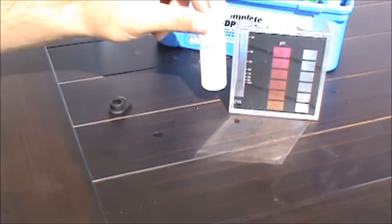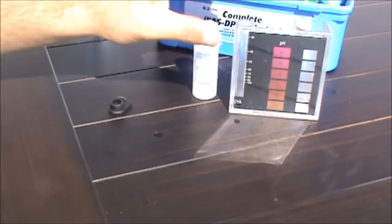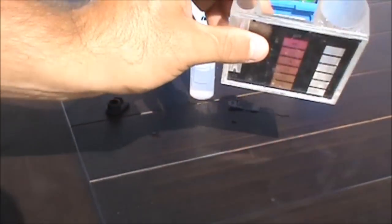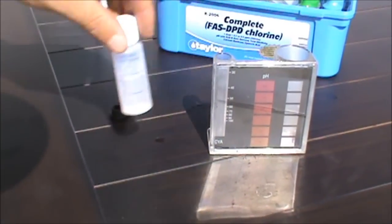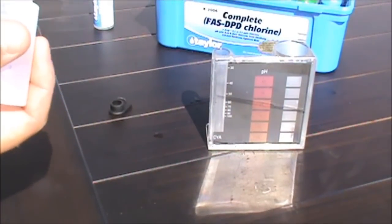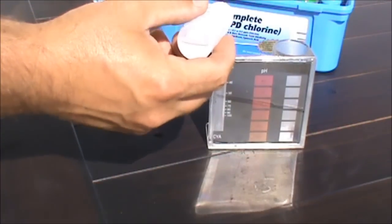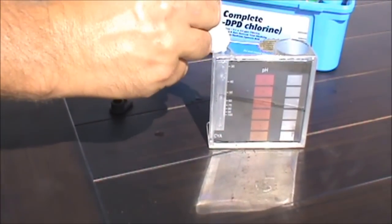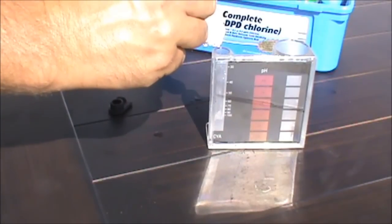Alright, that's been 30 seconds. Before I put it in there, I want to show you the black dot at the bottom of the comparator. I'm going to add this in, and once that dot disappears, I'm going to read the CYA level. We're just putting our solution in here and you can see the solution is cloudy.